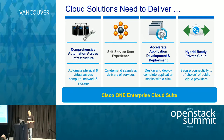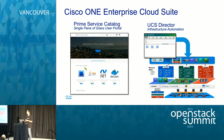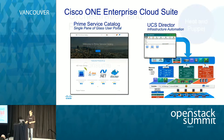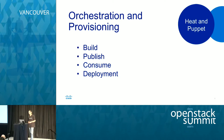This suite of products is being go-to-market and downloadable as the Cisco One Enterprise Cloud Suite. But for today, we're not going to cover all those products. We're going to focus on the orchestration integration between Prime Service Catalog and UCS Director. UCS Director specializes in infrastructure automation, and Prime Service Catalog provides the single pane of glass user experience. We want to look at the orchestration and provisioning use cases and requirements we need to address.